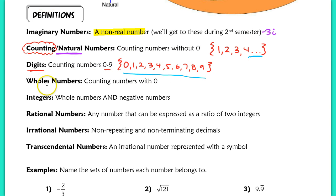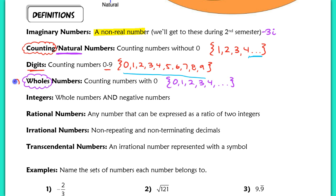Next, we have the whole numbers. This came about because we needed a way to describe having nothing — when a farmer wanted to describe that he had no cows, they invented 0. So the whole numbers are all of your natural numbers including 0, and this set goes on forever. I remember that whole numbers includes 0 because I think of literally a whole, which reminds me of 0.